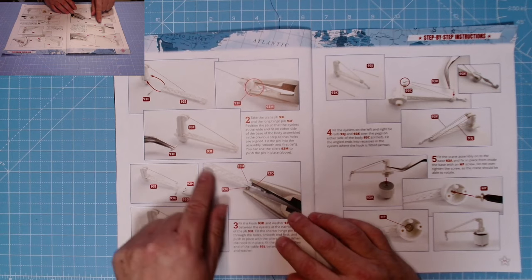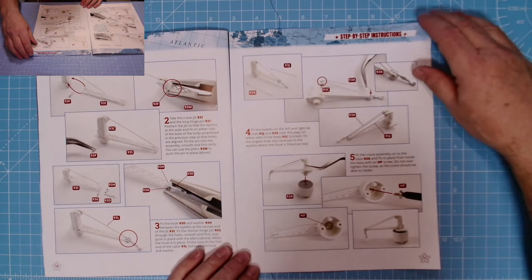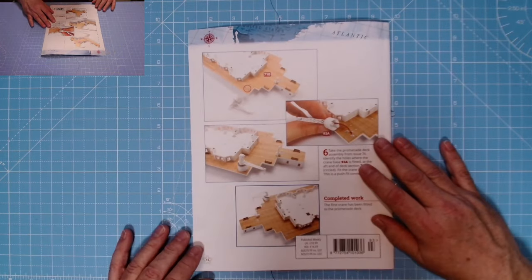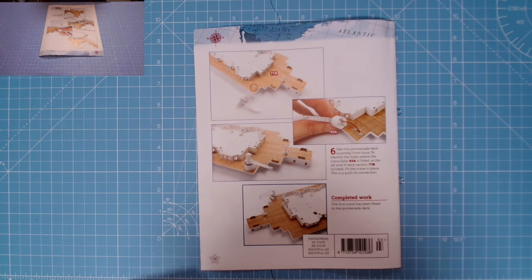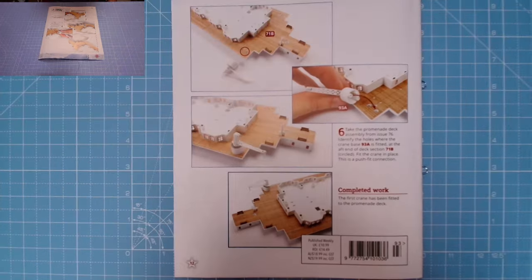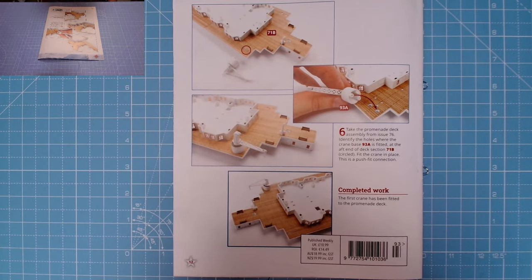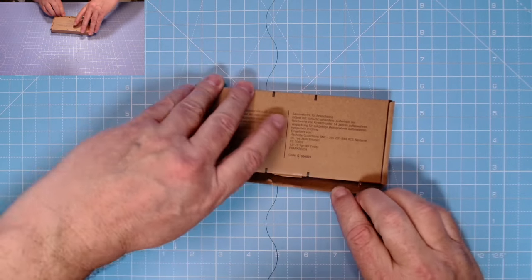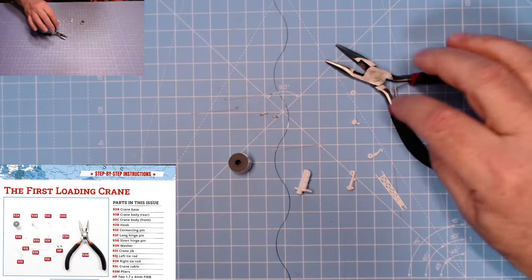So we've got a little bit of fiddly work to do getting this put together. Here we go - pins: there's a long pin, there's a short pin. Hopefully it won't be too bad because we've got to do it all again in Issue 94. So without further ado, let's get on with the build.